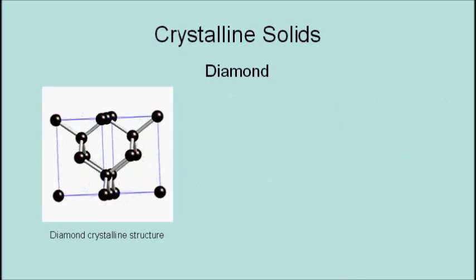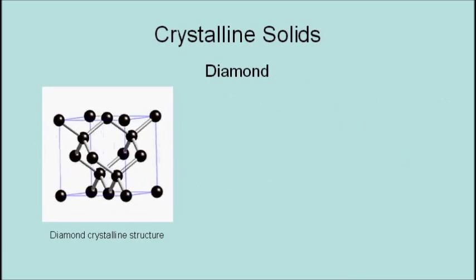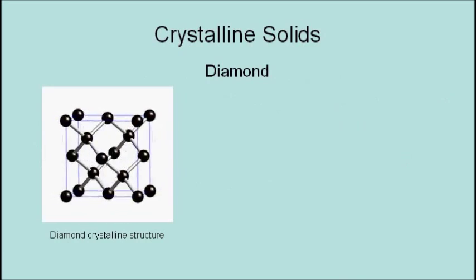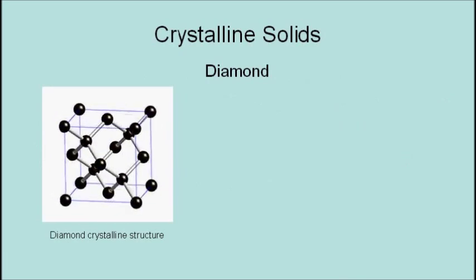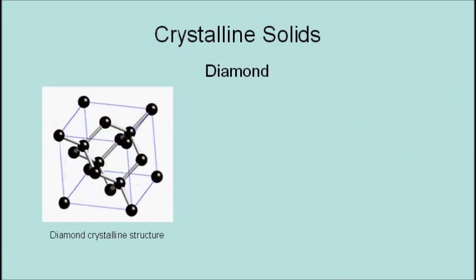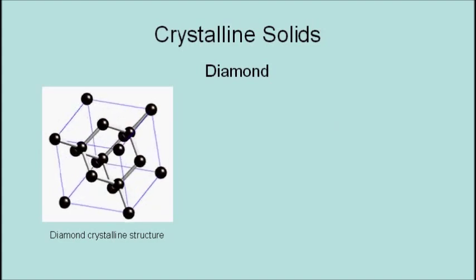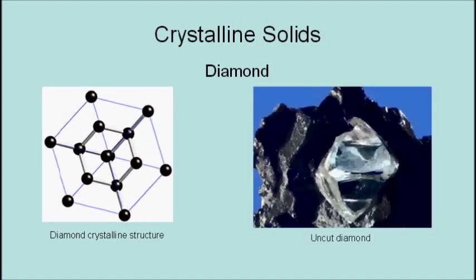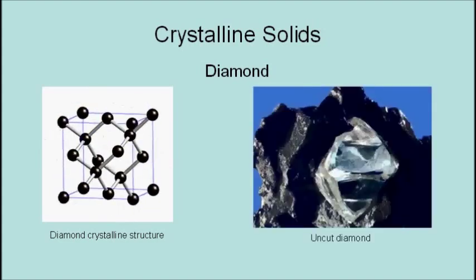Another common example of a crystalline solid is a diamond. Here is a three-dimensional illustration of a diamond's crystalline structure. This is an example of an uncut diamond.